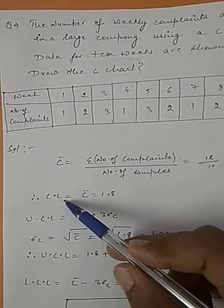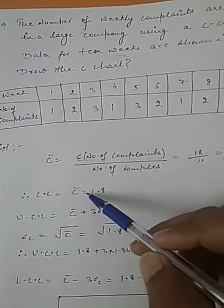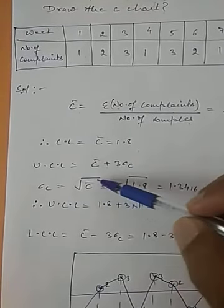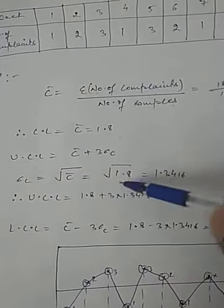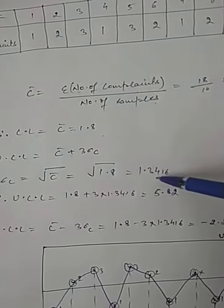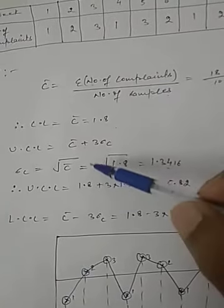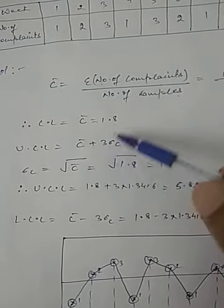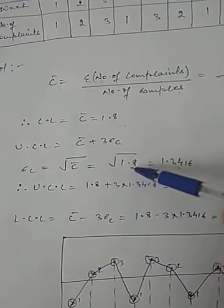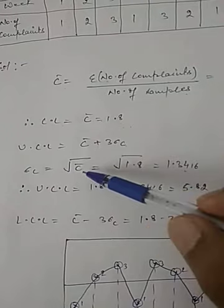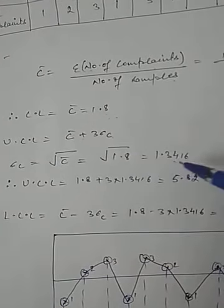The central line is C-bar equals 1.8. Upper control limit equals C-bar plus 3 sigma-c, where sigma-c equals square root of C-bar, which equals square root of 1.8, which equals 1.3416. So upper control limit equals 1.8 plus 3 times 1.3416.